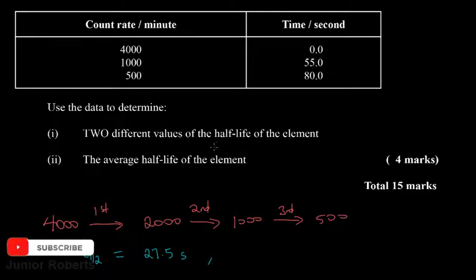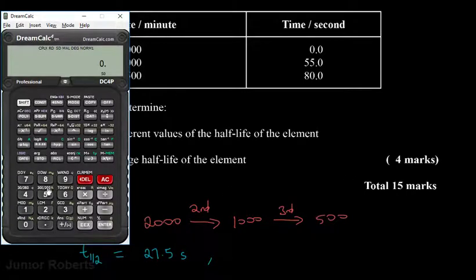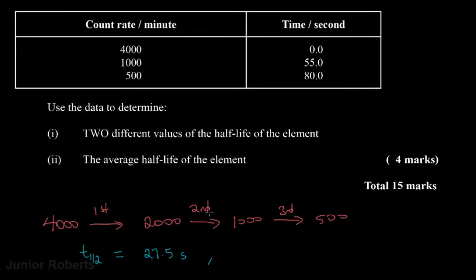To determine our second half-life, we look at the time it takes to go from a count rate of 1,000 to 500. At a count rate of 1,000 the time was 55 seconds, while at a count rate of 500 the time was 80 seconds. So we subtract: 80 minus 55 gives us 25 seconds. Therefore our second half-life is 25 seconds.